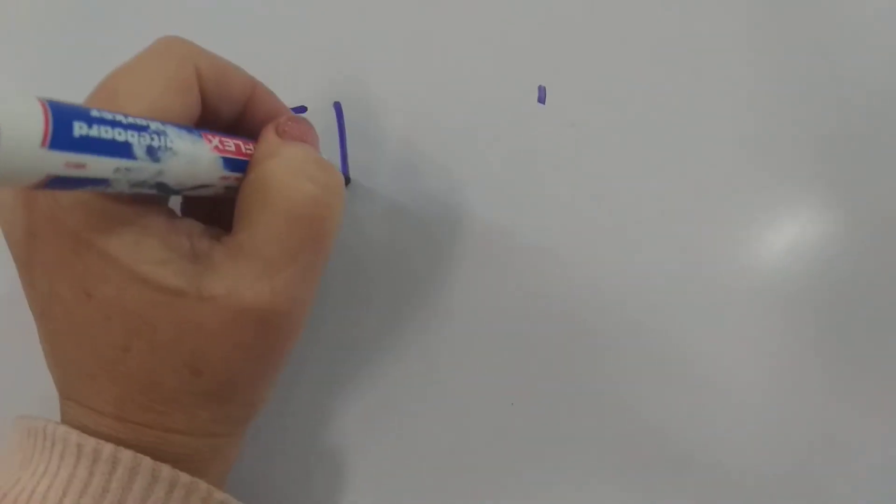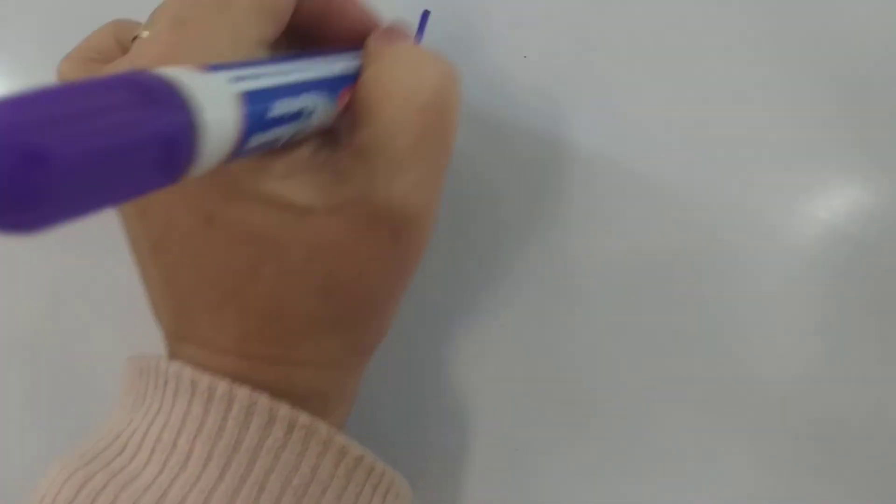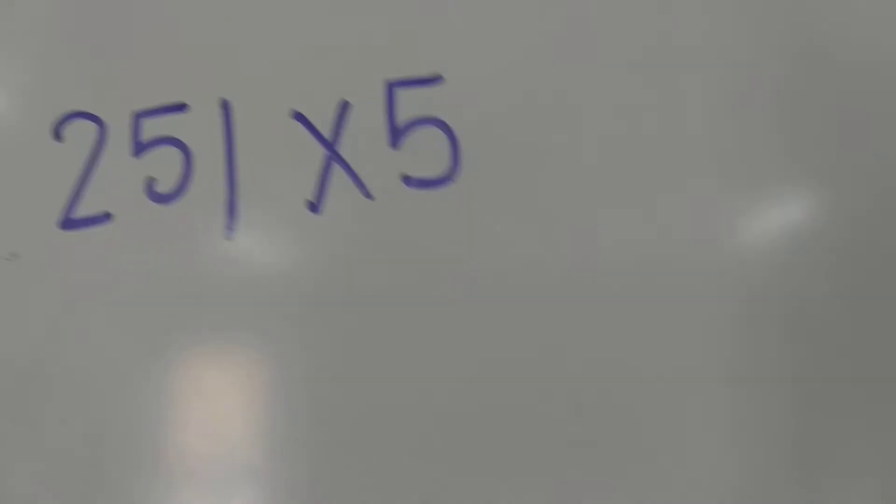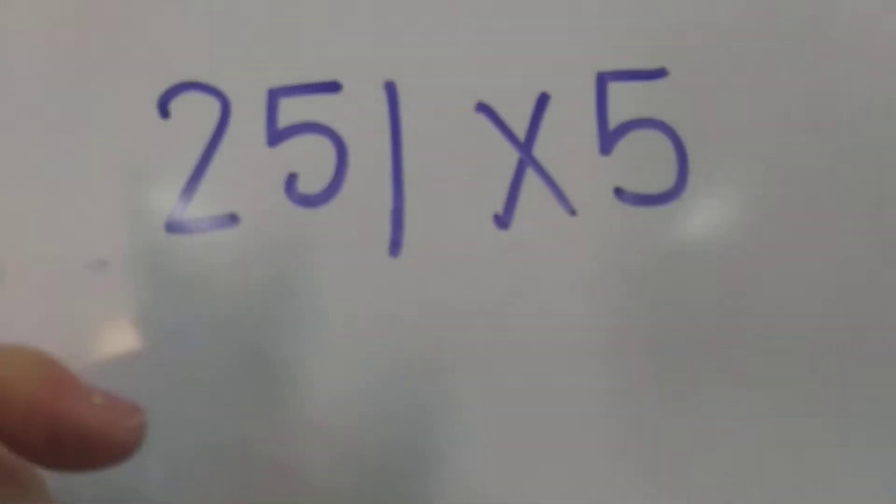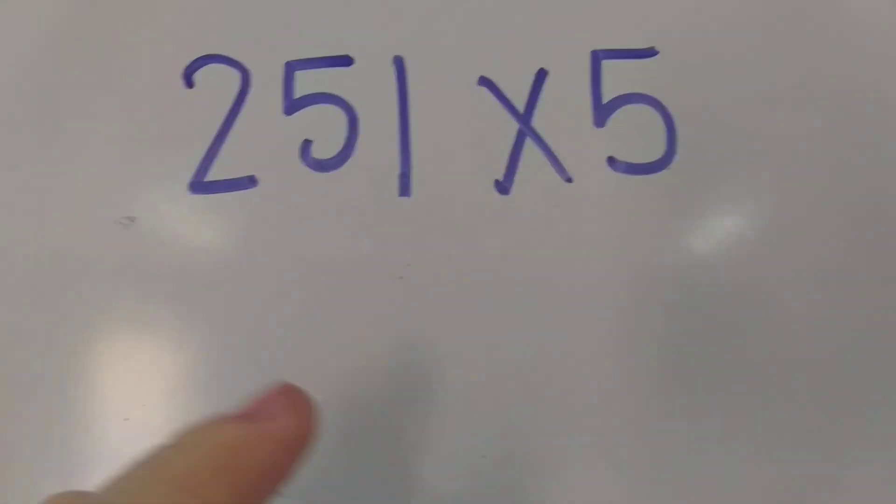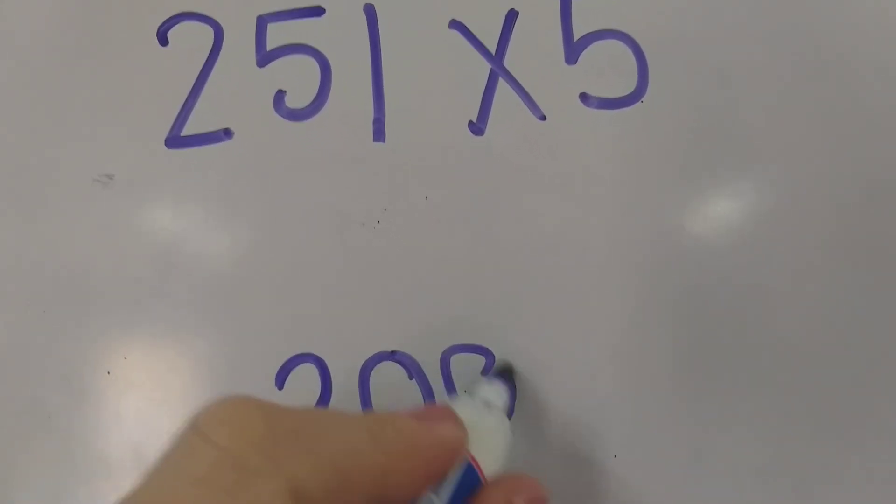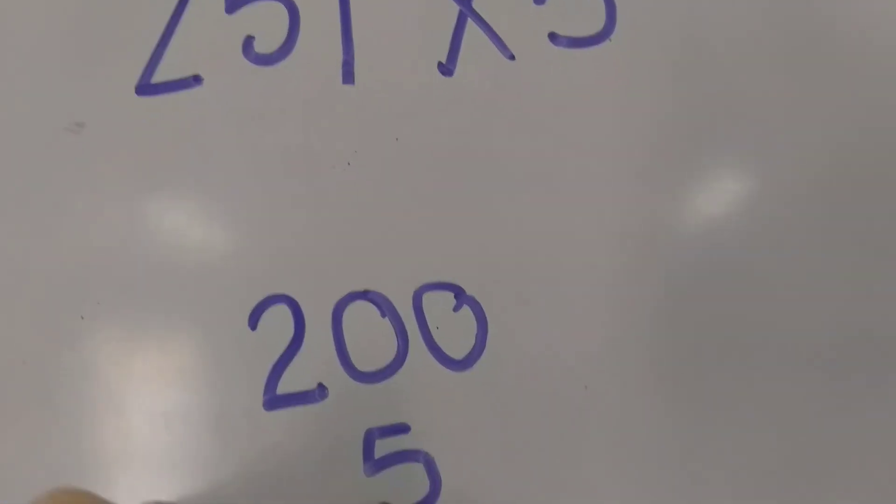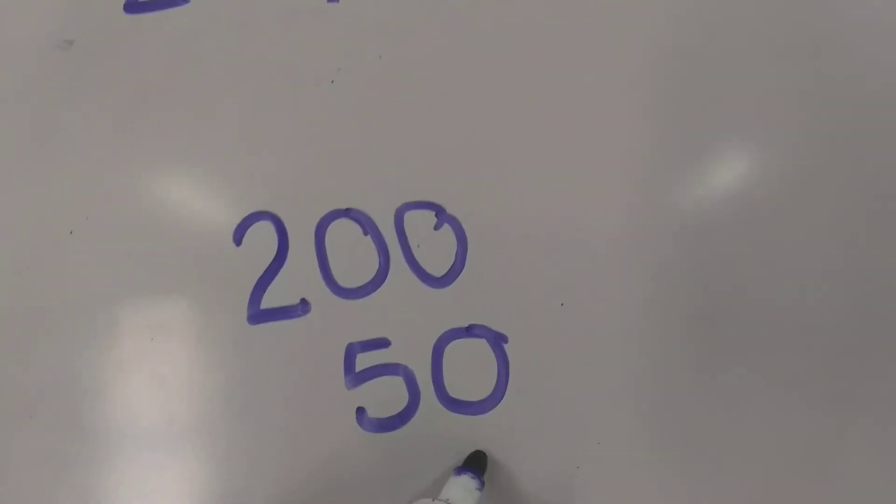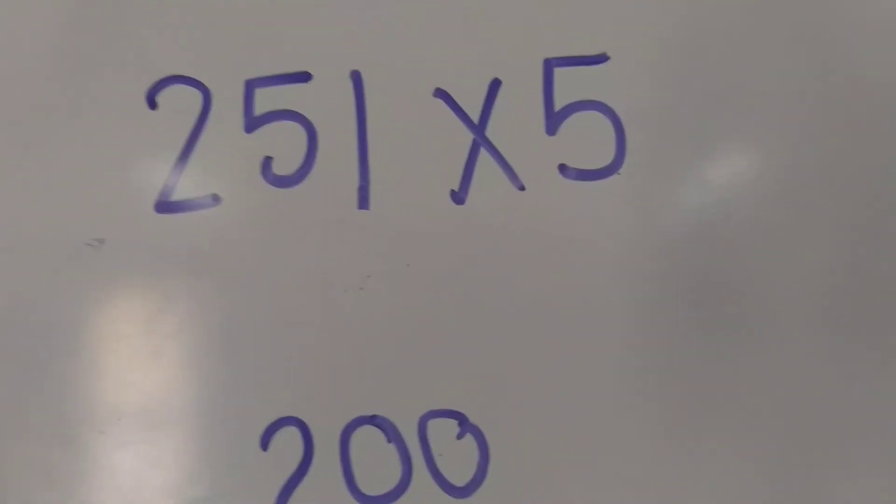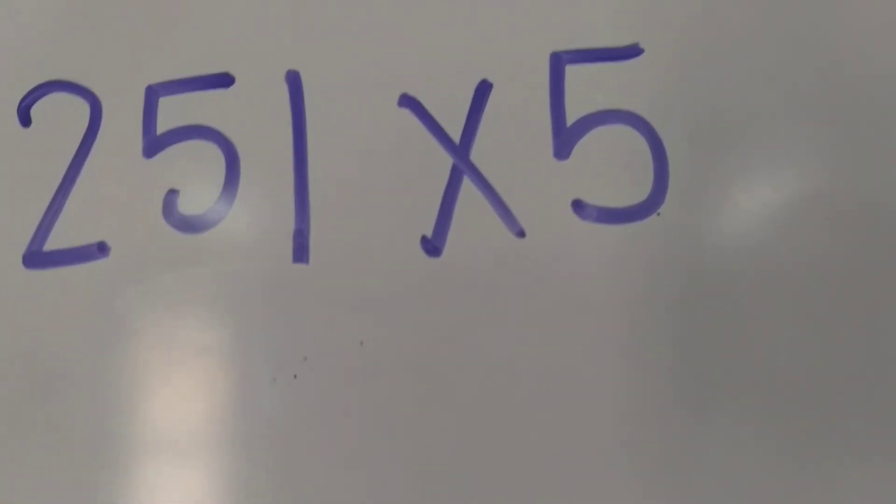251, and we times it by 5. Timesing by 5 is so easy. So we're going to break that number down. So we have 200, we have 50, and we have 1. What are we timesing by? We times it by 5.